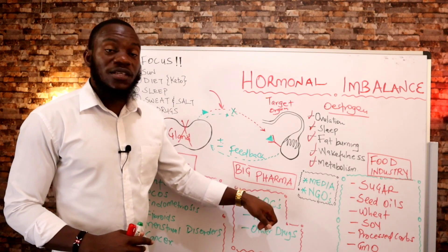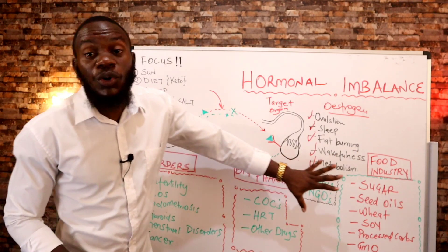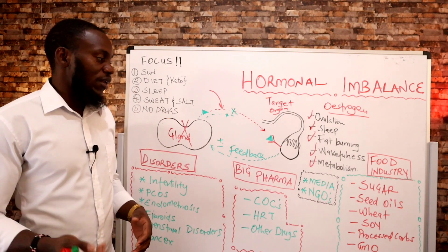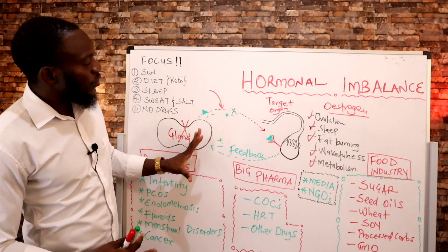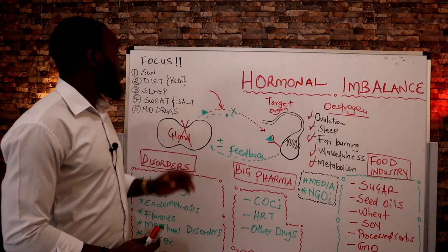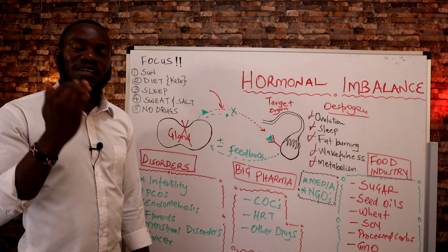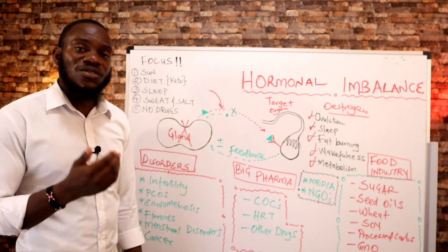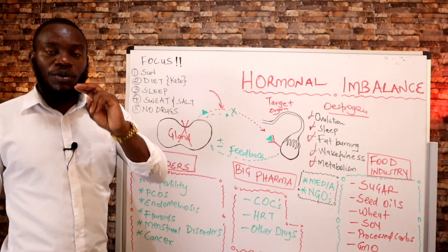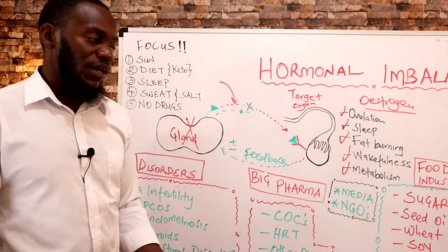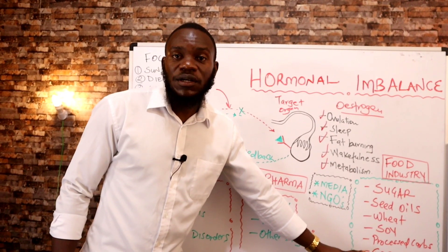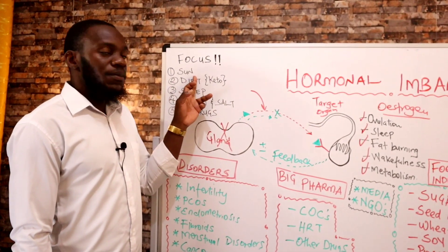You end up spending more money managing conditions you could have handled through appropriate dieting. NGOs, big pharma, and the food industry are all working together to drain your pockets. To get out of hormonal imbalances, manage the root cause rather than symptoms. Number one is sunlight — the sun is the number one endocrine stabilizer. Use midday sunlight; it will stabilize your hormones. The sun does not cause cancer — that's a myth. Number two is an appropriate diet: healthy keto, meaning high protein and high animal fat.